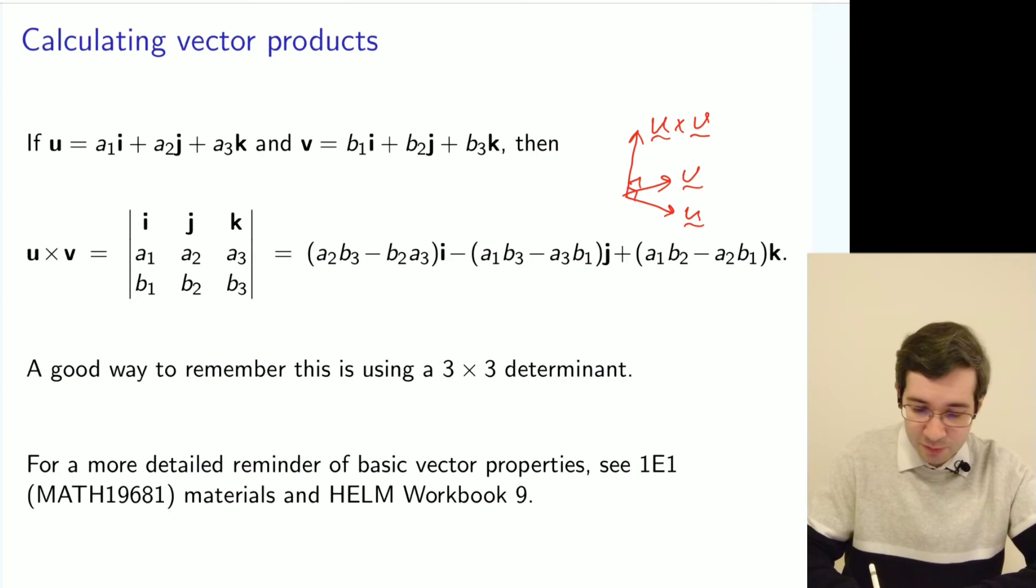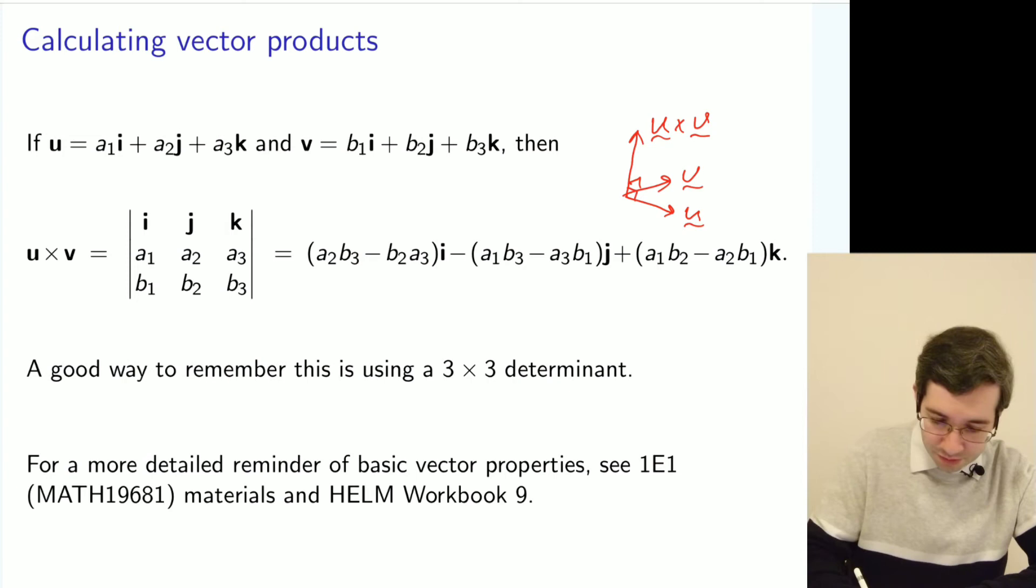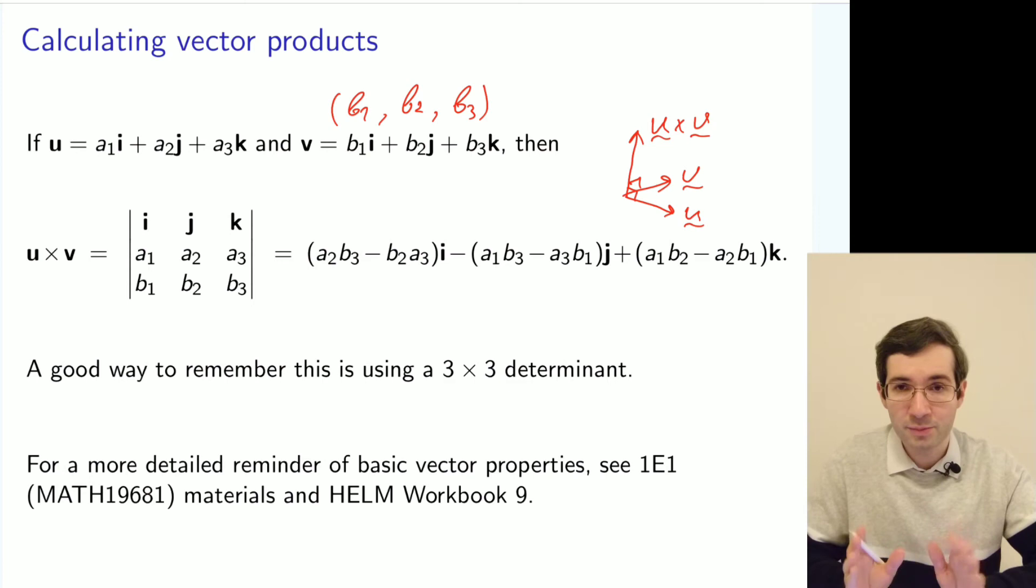If you write it this way, write together with i, j, k, and if you want to use the other form you can use b1, b2, b3 and put them in brackets. But use one or the other, don't mix them.